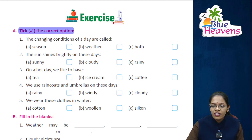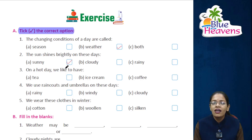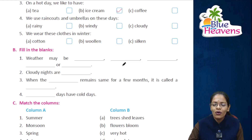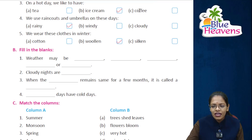Tick the correct option. The changing conditions of a day are called — sunny, hot, cold, windy, cloudy — weather is the right answer. The sun shines brightly on these days — sunny day is the right answer. On a hot day we like to have — ice cream is the right answer. We use raincoats and umbrellas on these days — rainy days is the right answer. We wear these clothes in winter — woolen clothes is the right answer.